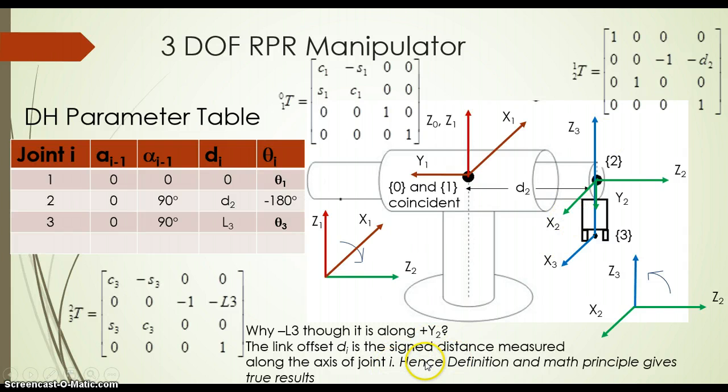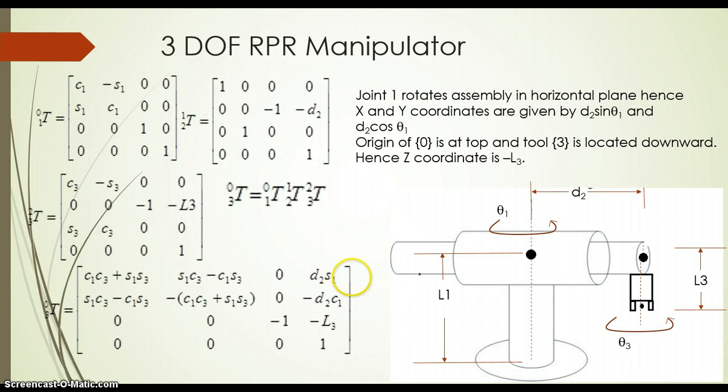And using general derivation of the transformation matrix, we also get minus L3. Hence, we can see that our definition as well as our mathematical principle give us the true value, though it is plus y2. Now we can obtain the transformation matrix of joint 3 with respect to the base frame by multiplying 0T1, 1T2, 2T3 together. And 0T3 will be this final matrix.